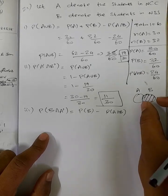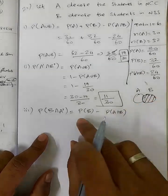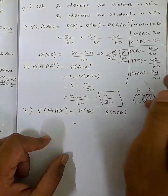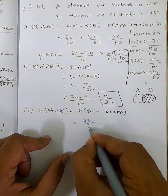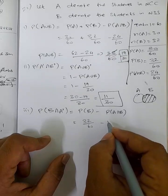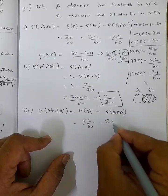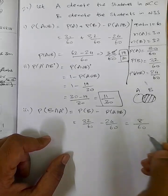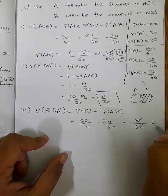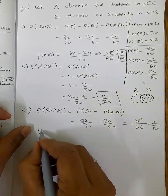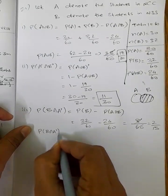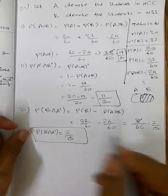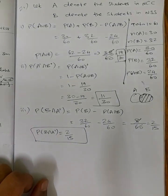So, P of B minus P of A intersection B equals 32/60 minus 24/60 equals 8/60. Simplifying: 8/60 equals 2/15. Therefore, P of B intersection A dash equals 2/15.